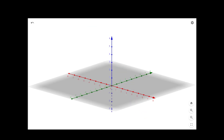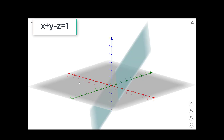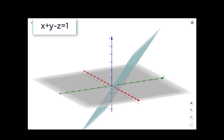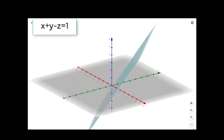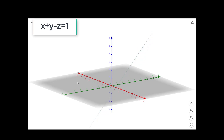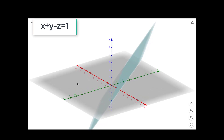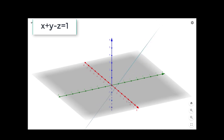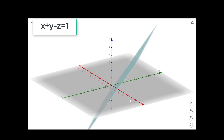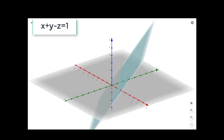Now let us see the third equation: x plus y minus z equal to 1. This is how the plane will look. The x-intercept and y-intercept are towards the positive direction, and the z-intercept is towards the negative direction. The plane passes through the points (1, 0, 0), (0, 1, 0), and (0, 0, -1). So the plane passes through these three points on the axes.